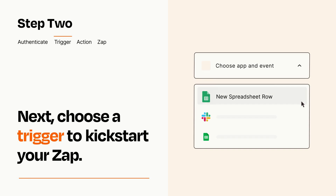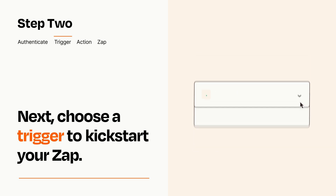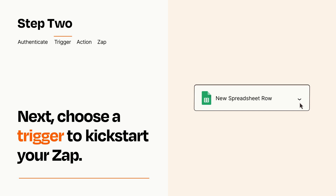Now let's set up your trigger, which is the event that starts your Zap. Pick the trigger event that you want from the list. When you set up this step, your Zap will pull in test data from your trigger app that you'll see later when setting up your action app.